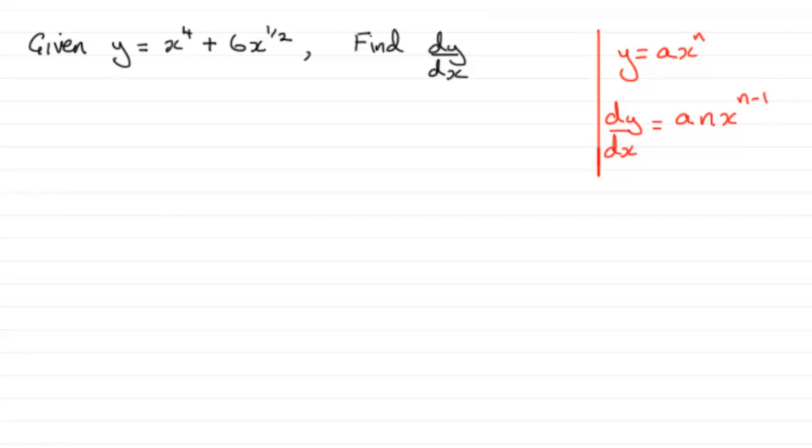So if we use that rule here then what we've got is that therefore dy dx equals, and for the first one our a value is 1, so you've got 4 times 1 which is 4, then you reduce the power by 1 so you've got 4x cubed.